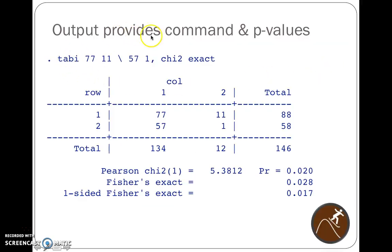The output by Stata is provided. Here's the command, tab i. So you don't even need to use the point and click. You just type tab i, 77 space 11 backslash 57 space 1 comma. If you wanted to just do the exact test, just type in exact. If you want to do both, you can type in both. Even though chi-square is not appropriate, I still included it for you to see.